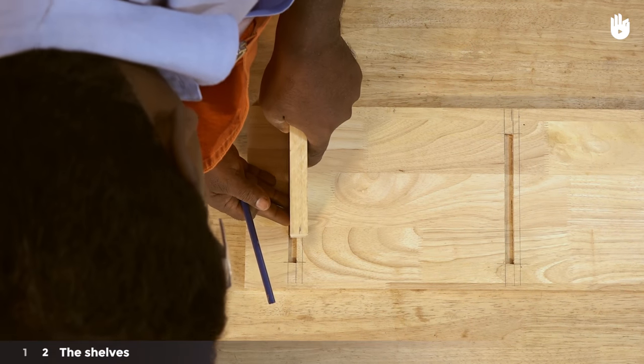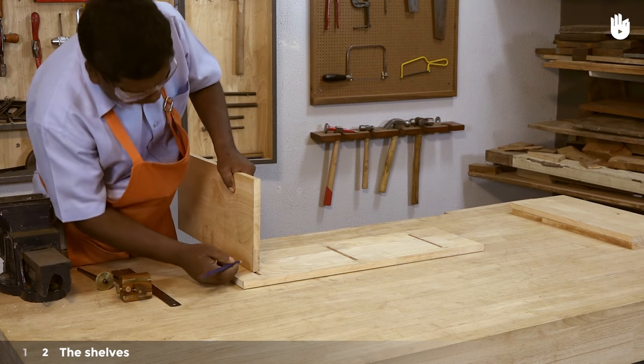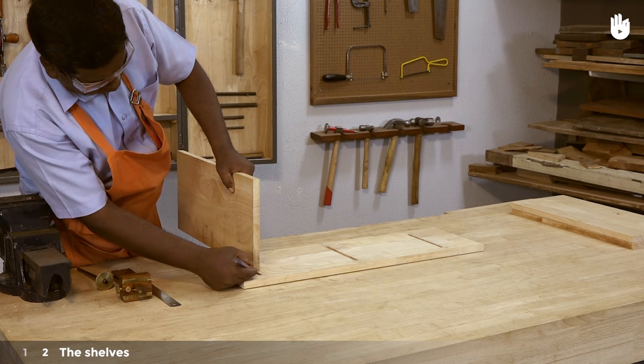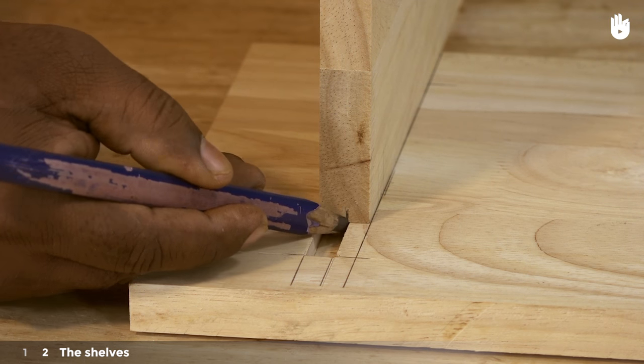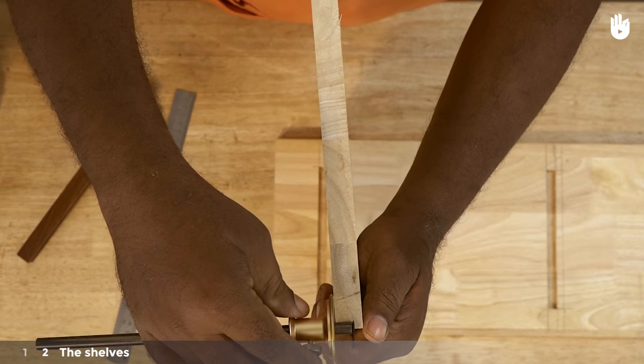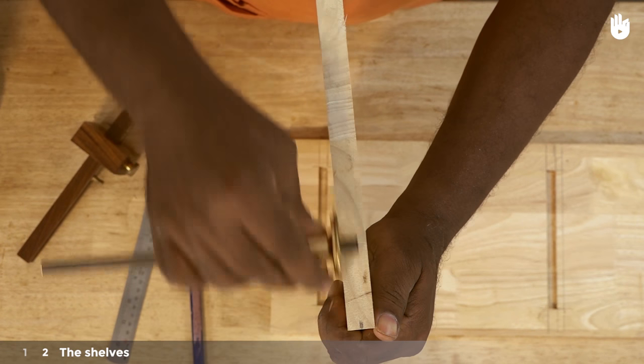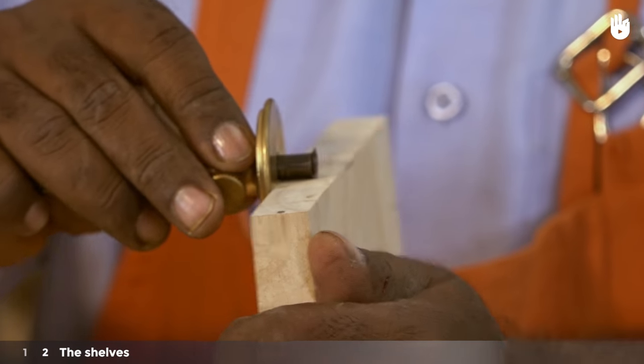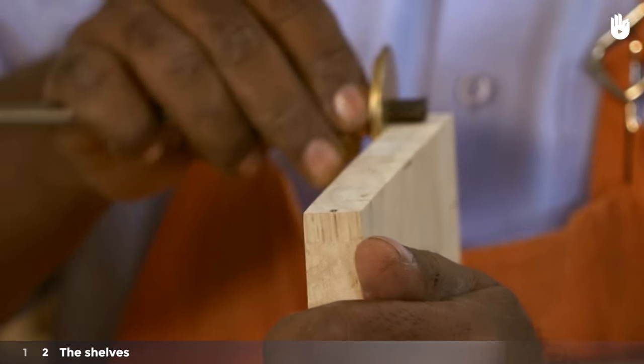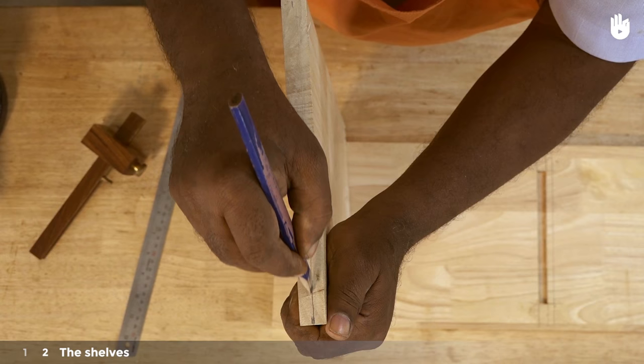Step 2, the shelves. Place the shelf on the side panel and mark out 1 cm from the width of the mortise for the tenon. Set a marking gauge to the thickness of the mortise and scribe a line along the edge of the shelf to define the shoulder of the tenon. Highlight with a pencil.